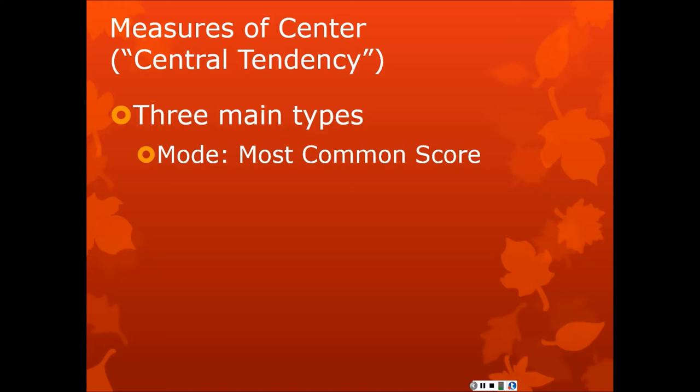There's the mode, which is easy to find. It's just the most common score. Now score means numerical observation. As if 30 people in a class all took a test and you say, what's the most common test score? Oh, 73, because 12 people got a 73 exactly. The median is the half and half point.